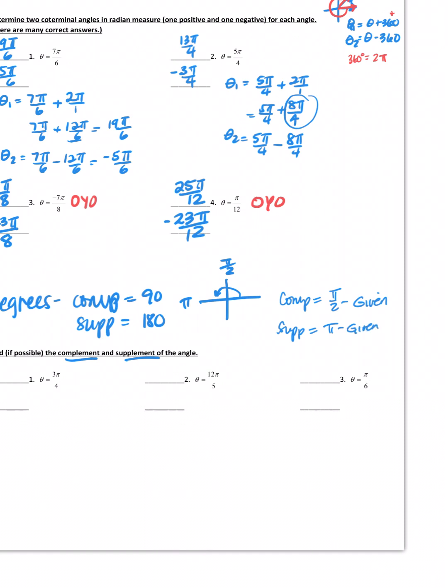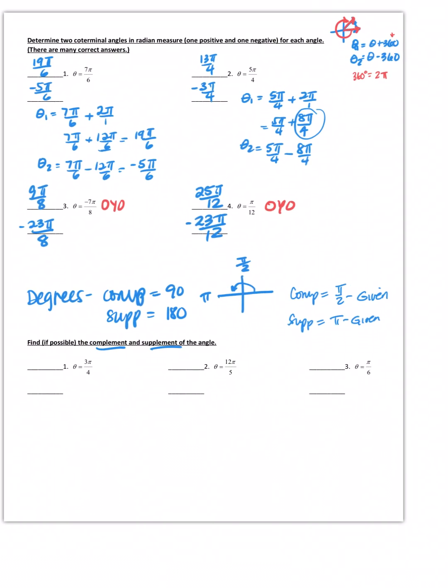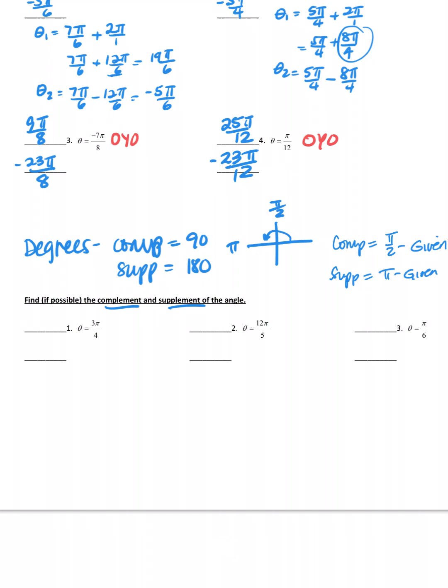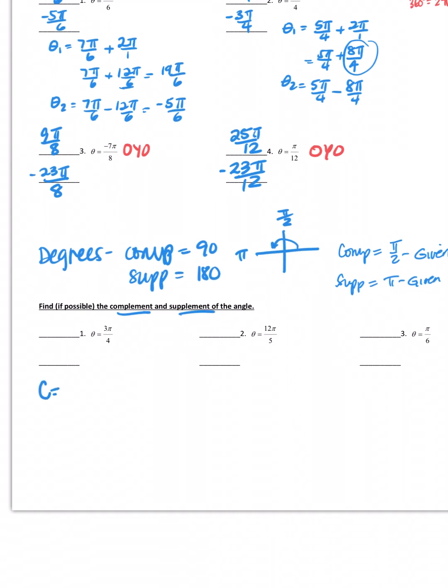In radians, the complement will be π over 2 minus the given angle, and the supplement will be pi minus the given angle. Your answers have to be positive. You cannot have a negative complement and you cannot have a negative supplement. So let's look at number 1. For complement, I'm going to have π over 2 minus 3π over 4. Obviously I need to get a common denominator. If I do that, I get 2π over 4 minus 3π over 4. That's going to be a negative answer, so that means there is no complement.